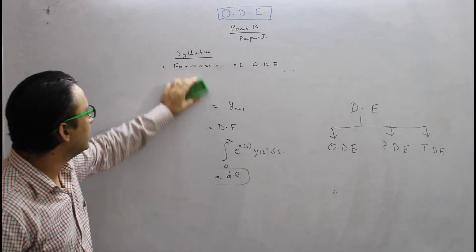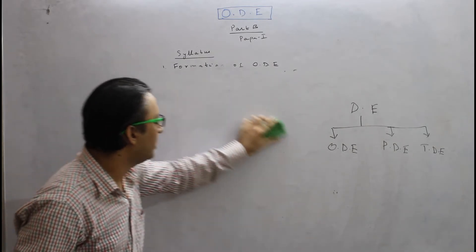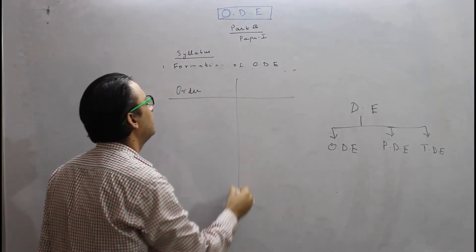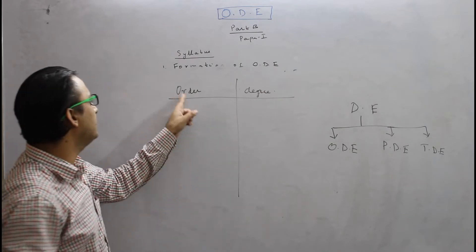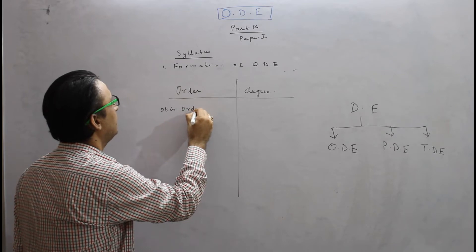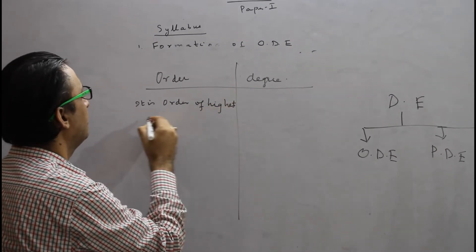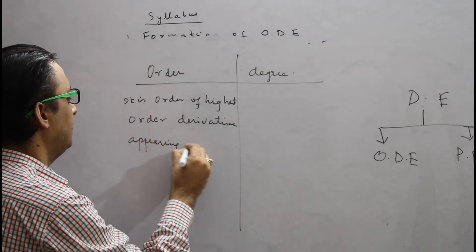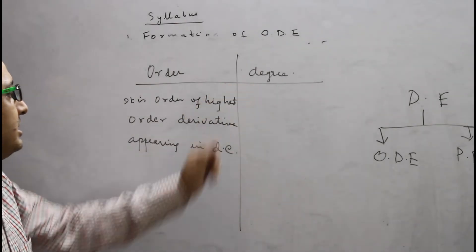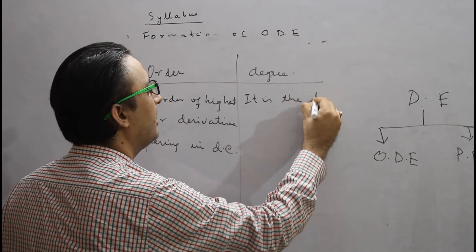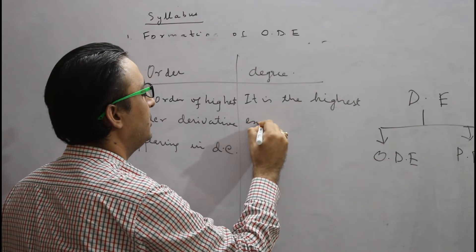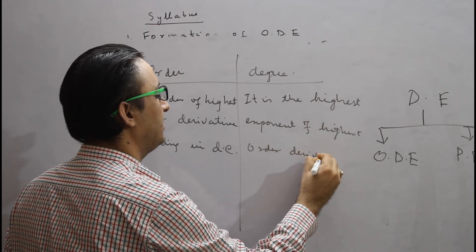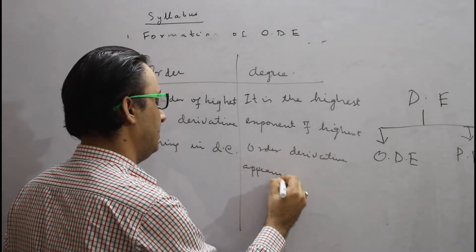Proceeding further, some more important concepts: we need to define order and degree. Order is the order of the highest order derivative appearing in the differential equation. Degree is the highest exponent of the highest order derivative appearing in the differential equation.